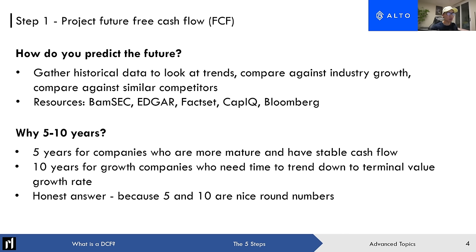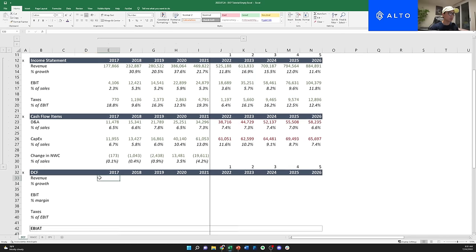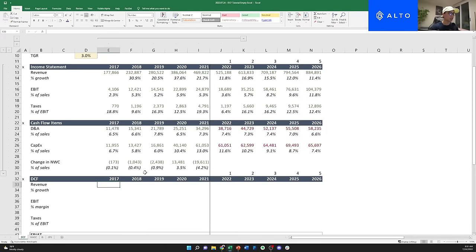Growth companies need time to trend down to their terminal value growth rate. The answer for why five or ten years is partly just that they're nice round numbers — you could do a four-year or eight-year DCF, it doesn't really matter. There's no hard and fast rule. For example, when I was building out biotech DCFs at JP Morgan in the healthcare group, my DCFs were 20 to 30 years. It's really up to the person modeling. Now let's actually jump into Excel and build out the DCF portion.